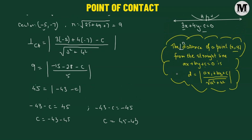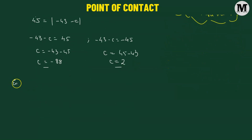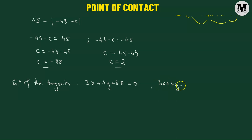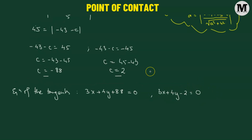Now that we have the values of c, we can write the equations of the two tangents. With c equals negative 88 we get 3x plus 4y plus 88 equals 0, and with c equals 2 we get 3x plus 4y minus 2 equals 0.